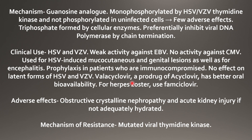Valacyclovir is the pro-drug of acyclovir with better oral bioavailability. Famciclovir is used for the treatment of herpes zoster. The adverse effects are important and high yield — acyclovir causes obstructive crystalline nephropathy and acute kidney injury if the patient is not adequately hydrated. Resistance is developed due to production of mutated viral thymidine kinase, which was responsible for the drug's activation.